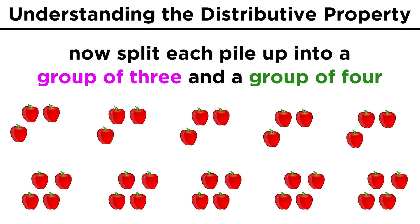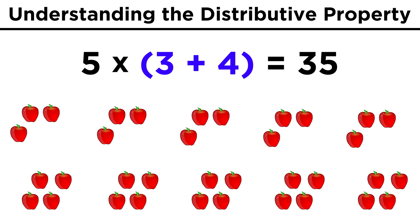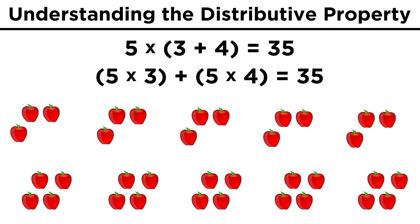What if we split each pile up into a group of three and a group of four? There are a few ways we could represent this. Let's take the seven and split it up into three plus four, in parentheses. This is clearly the same value we once had, because three plus four is seven, which makes sense because rearranging the apples shouldn't change the number of them that are present.